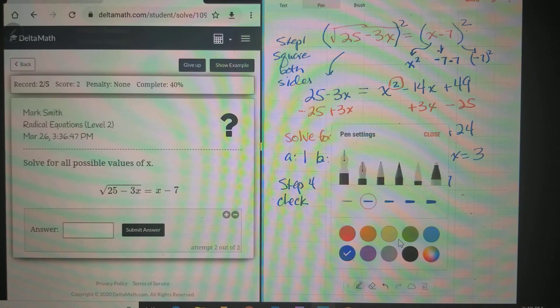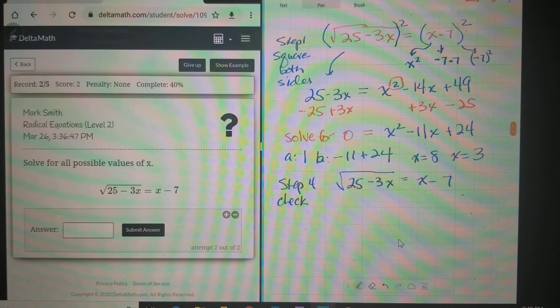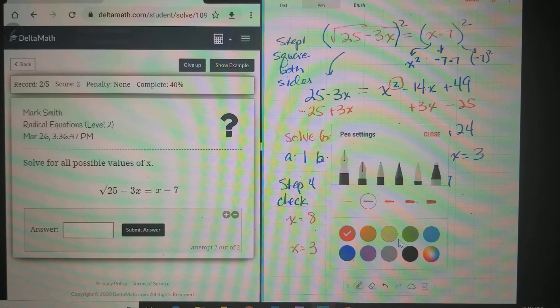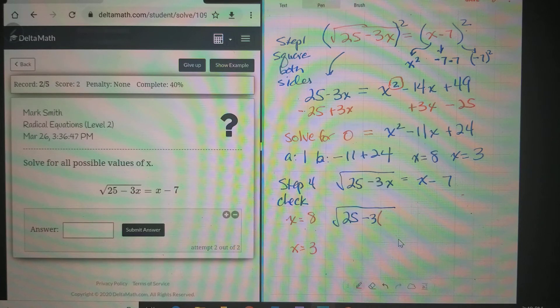We go back to the original equation, which is √(25 - 3x) = x - 7. And we have to substitute for both of these. We have to substitute for x = 8 and we have to substitute for x = 3. So let's substitute for x = 8. We get √(25 - 3 times 8).